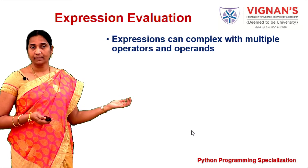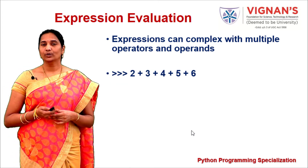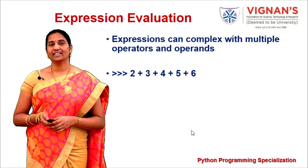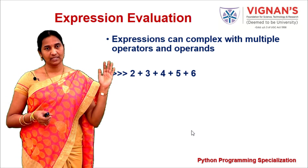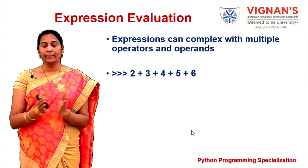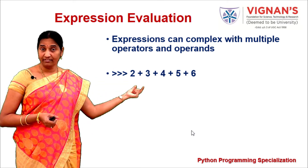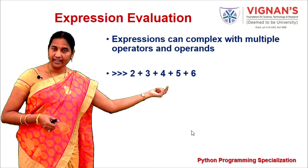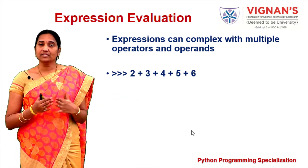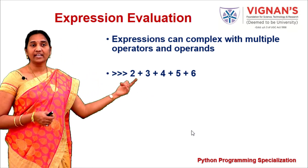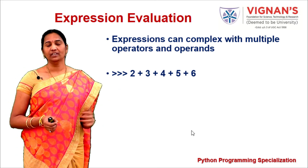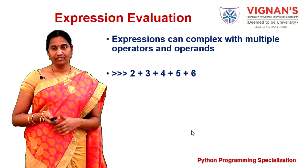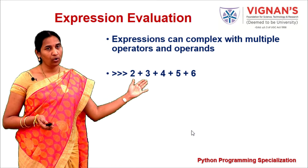Expressions can also be complex, containing multiple operators and operands. Consider 2 + 3 + 4 + 5 + 6, which contains only addition operators. You can add the operands in any order — do 2+3 first, or 5+6 first — and the result is always the same: 2+3=5, +4=9, +5=14, +6=20.